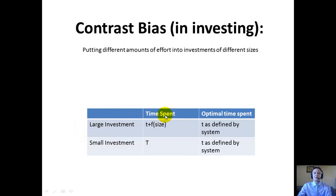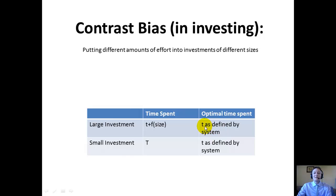What he has here is actually a function that determines the time spent on the investment, related to the size of the investment. While he spent T hours on the first investment, the bigger investment made him spend T hours plus some extra amount — a function of the size of the investment. But that is not optimal. We're not lab rats; we don't need to conserve energy for different investments. This is just a bias acting in an area that doesn't need it. The true optimal time spent on any investment decision is simply T, as defined by your prediction system — the method you use to determine whether a stock is going to move in a certain direction. For some people that's fundamental analysis, for others it's technical analysis; it doesn't matter as long as you have a system.